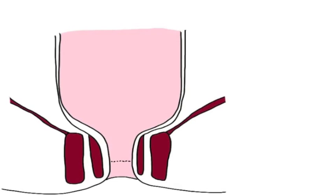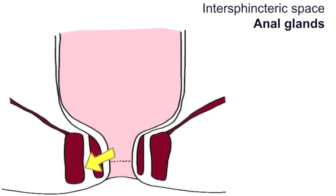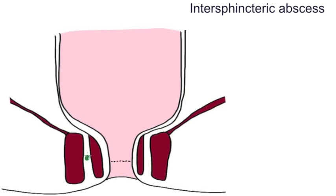Here is a coronal section looking at the anal canal. Either side are the internal anal sphincters, which is the involuntary muscle, and the external anal sphincters here, which is the voluntary muscle. Between the two is the intersphincteric space, and here live some anal glands. An abscess can develop from these anal glands, forming an intersphincteric abscess.